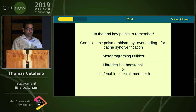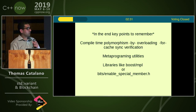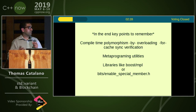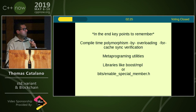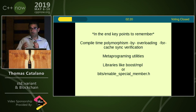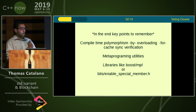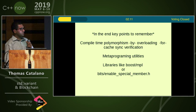The key points to remember are compile-time polymorphism for blockchain interfaces — whatever verification process that might be — overloading for cache sync verification, and meta programming utilities, whether that's in Boost's MPL meta programming library or in the standard library found in the bits headers.